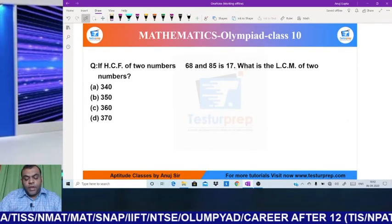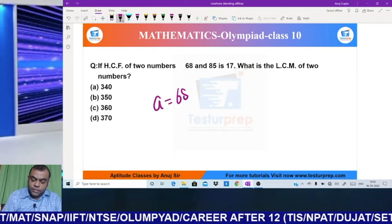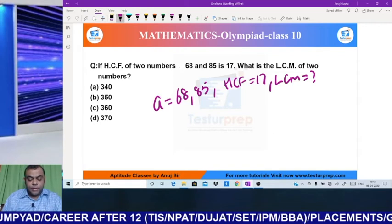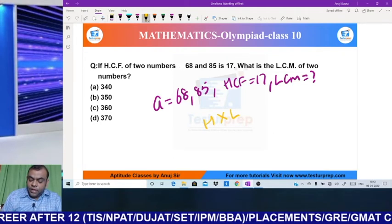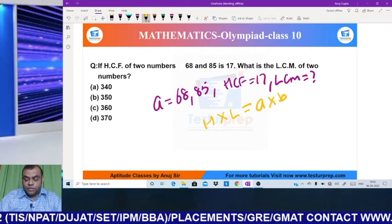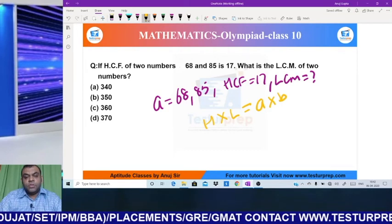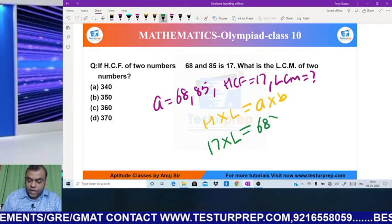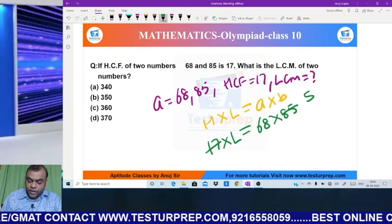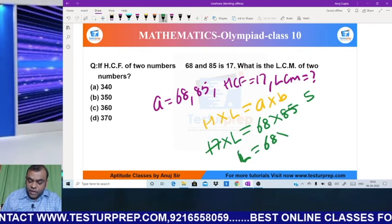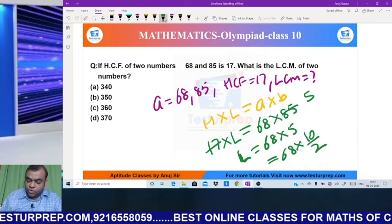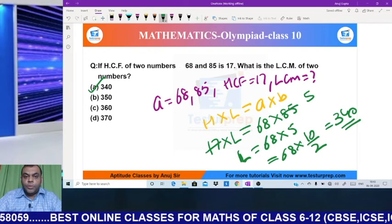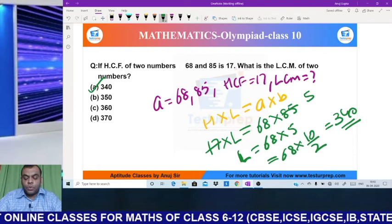My next question says that if HCF of 2 numbers 68 and 85, their HCF is 17, find their LCM. You have to find the LCM. Now, we have a relation between HCF, LCM and 2 numbers: HCF into LCM equals product of numbers. So here we will use this. HCF is given by 17, let LCM be L. The numbers are 68 and 85. So cutting here, 17, 5 times, the LCM becomes 68 into 5. Now how can we multiply this using Vedic Maths? So my answer would become 340. So my answer is A option, that is 340. I hope it's clear to everyone what relation exists between HCF, LCM, and product of numbers.